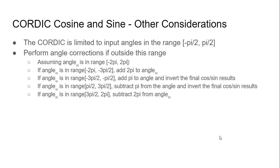And of course, there are other considerations with the CORDIC. So the CORDIC is limited to input angles in the range negative pi over 2 to pi over 2. So if your input angle is outside, then we have to perform angle corrections. And you can follow these procedures here, assuming the angles within range negative 2 pi to 2 pi. You may pause the video, but I'm going to go ahead.